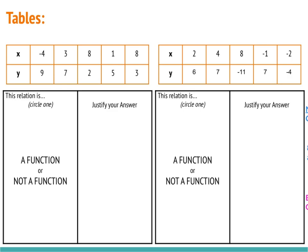Here we are looking at some examples through tables. We've got two tables. We need to determine if each one is a function or not a function and justify our answer. Remember, a function is a relation where every input has only one output.